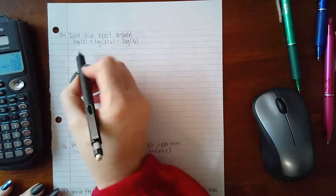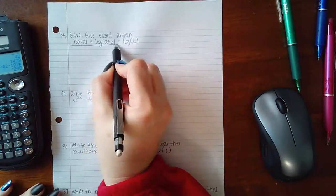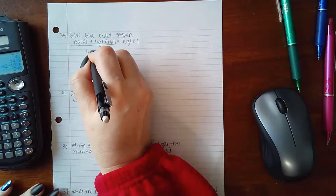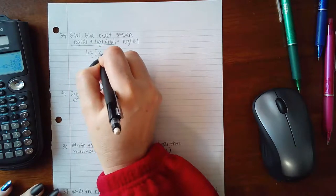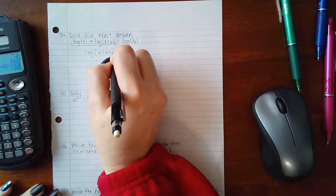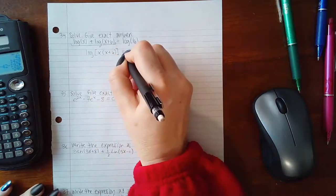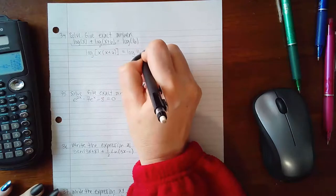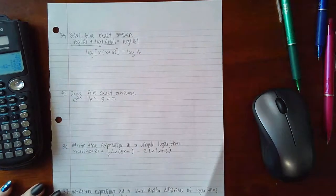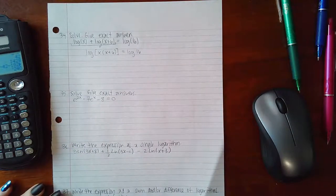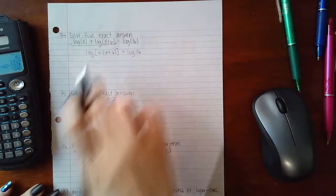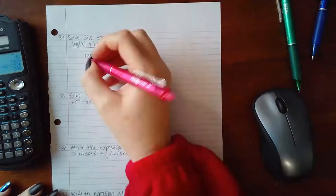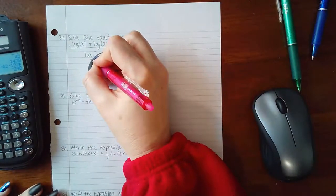If I use my properties when I'm adding two logs that have the same base, I can write them as one log and plus means I will multiply those arguments. Then I can use the inverse properties of logs and exponentials to cancel out the logs on both sides. The base here is a common base when there's nothing there, which is 10.